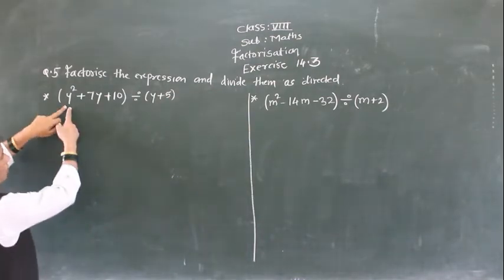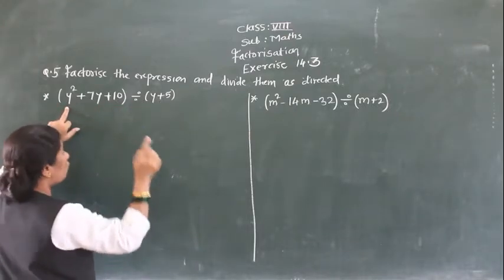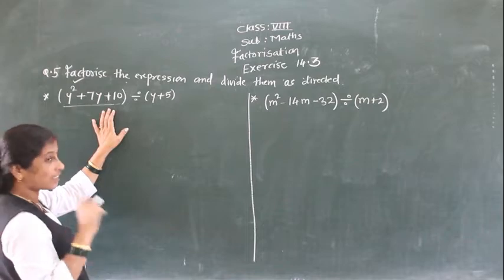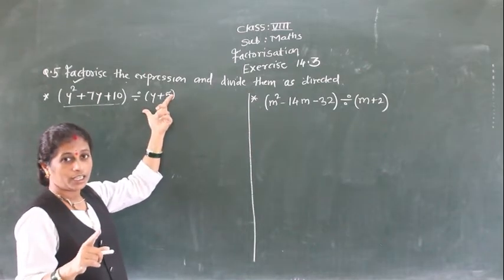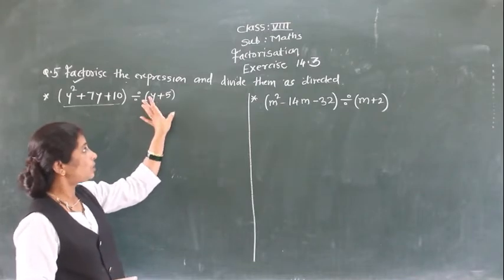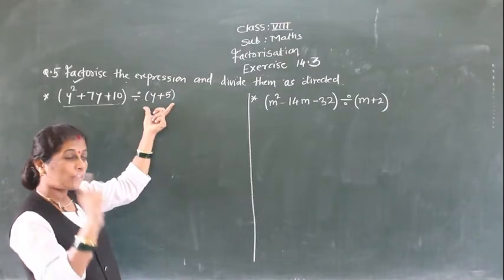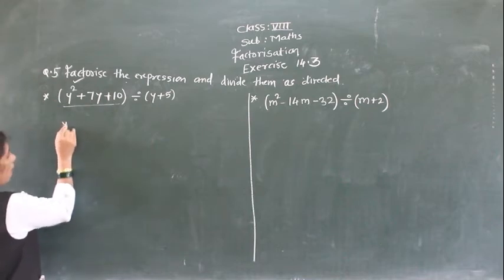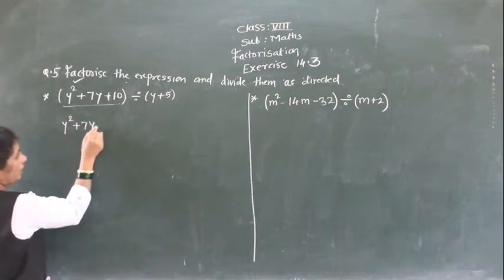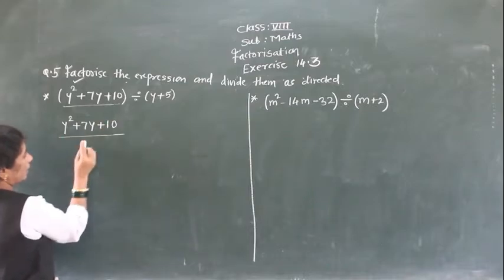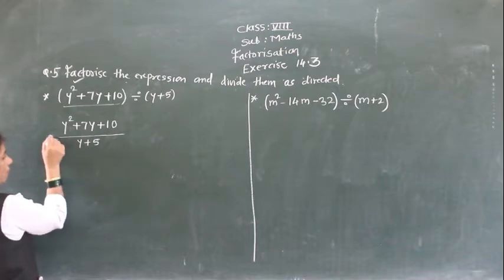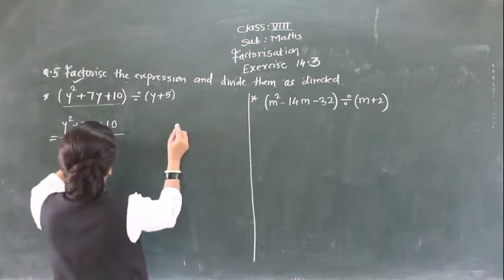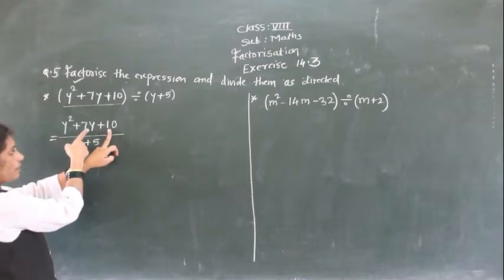So here first example: y²+7y+10 divided by (y+5). We have to first find the factors of the numerator. The numerator is y²+7y+10. One multiplied by 10 is 10, and 10 is positive. So we have to find factors of 10 such that their multiplication gives 10 and their addition gives the middle term 7, which is positive.